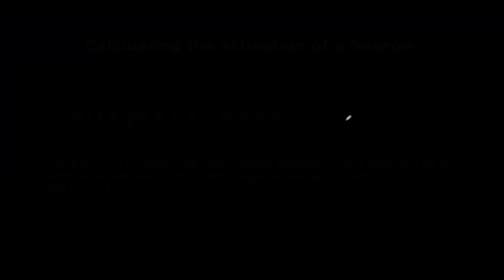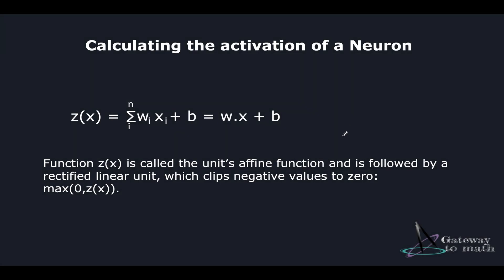Let us now see how we can calculate the activation of a neuron. The term activation basically means the neuron is triggering an output value of either zero or some positive number. We've already seen that z(x) equals the summation from i=1 to n of w_i x_i plus p, which equals w dot x plus b. Suppose we had n equals 3, so this equation becomes w1·x1 plus w2·x2 plus w3·x3 plus b. The function z(x) is the unit's affine function and is followed by a rectified linear unit which clips negative values to zero.